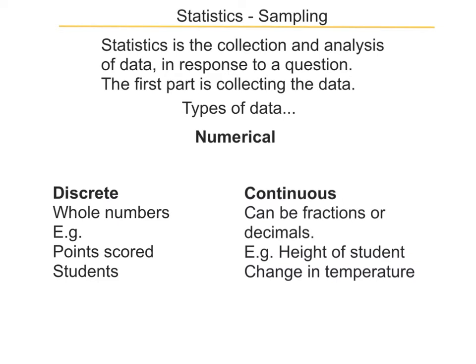For numerical data, there are two main sorts: discrete and continuous. With discrete, you can only have fixed values and no in-between values. Often this means whole numbers. For example, points scored in a game of football — you cannot score 63.5 points in a game of football; you can only score 63 or 64. The number of students doing something also has to be a whole number — you can't have half a student doing something.